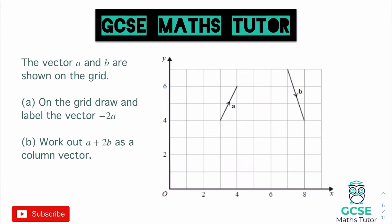We need to establish the pattern of A to make sure we draw this correctly. Starting from a certain point, we go across 1 and up 2 — that's the pattern. So let's pick a starting point that won't overlap with A, go across 1, up 2 — that gets us there — then across 1, up 2 again.